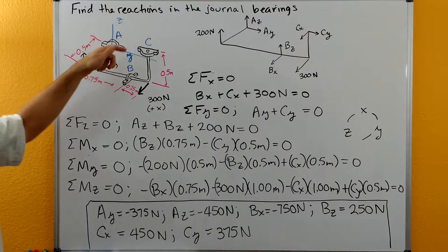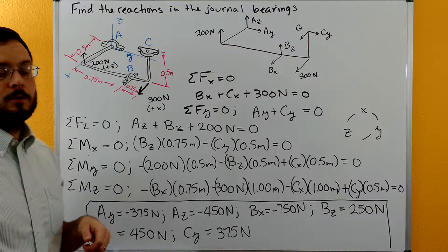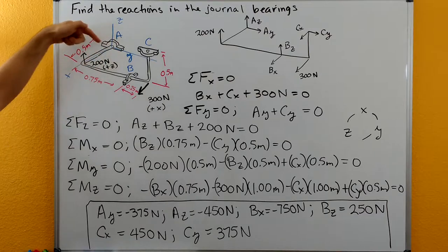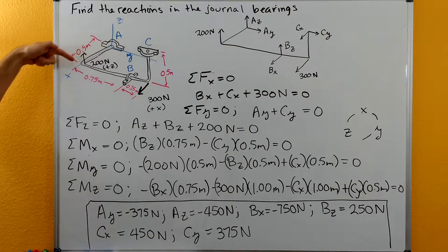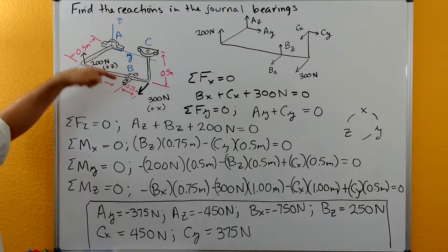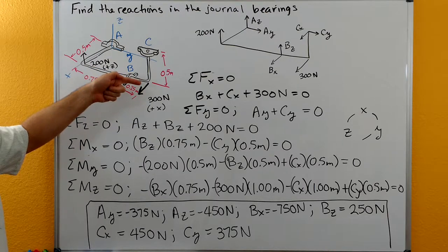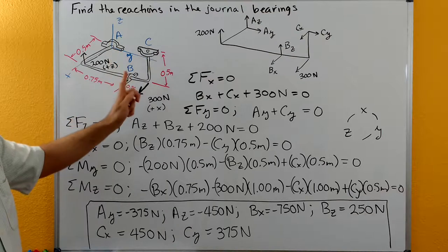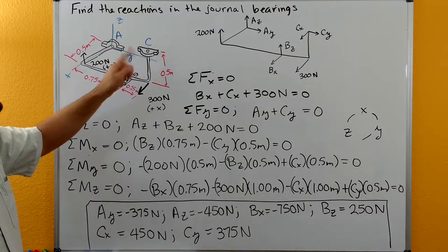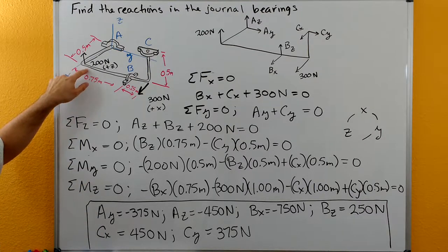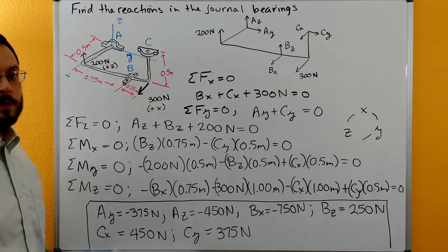We have three journal bearings and we need to find the reactions in them. This rod has a journal bearing at A, and this part of the rod goes along the x-axis. Then it takes a 90-degree bend and goes parallel to the y-axis, going through journal bearing at B. It goes a bit past B, takes another 90-degree bend, goes straight up in the z direction through journal bearing at C. We have an applied load of 200 newtons in the positive z direction and 300 newtons in the positive x direction.